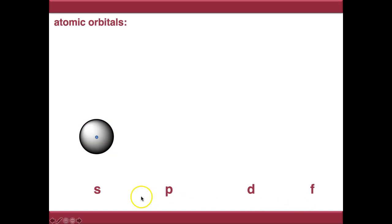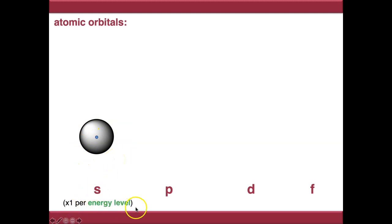So this is a three-dimensional spherical shape, it's not just circular. There's one S orbital per energy level — but more on that in a moment.